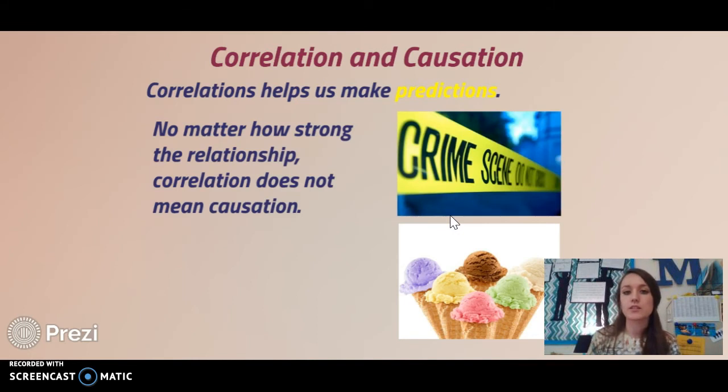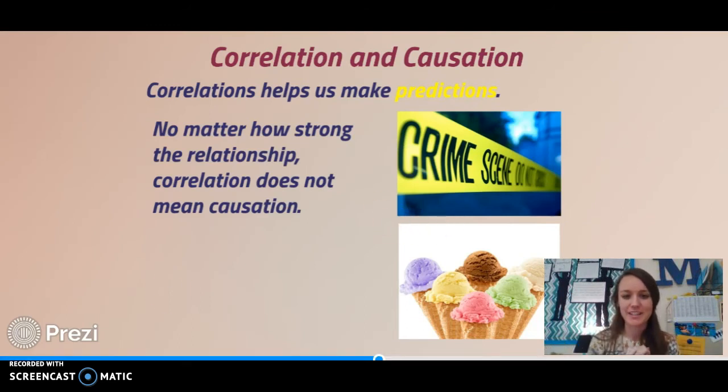This is a prime example. Ice cream sales increase while murder rates increase, and they're both appearing to be a positive correlation, but they don't cause each other. People buying ice cream aren't now going and murdering people because they've eaten ice cream. They're not causing each other. There's a third variable, which is summertime, that happens to be what's causing them. But they're just correlated, happening at the same time, going up together, but they're not causing each other.